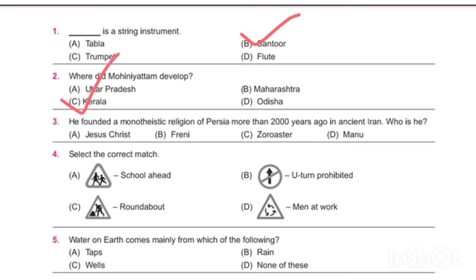Question number three: he founded a monotheistic religion more than two thousand years ago in ancient Iran — who was he? The answer will be Freni.